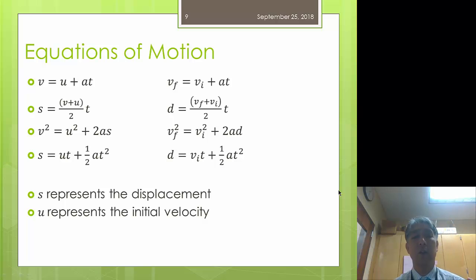The IB likes to use the letter s to represent displacement, whereas we generally use the letter d. And they also use the letter u to represent initial velocity. u, because it actually comes before v in the alphabet, so that represents initial velocity. The IB data book uses the IB format, so I'm introducing that to you just so you get used to it.